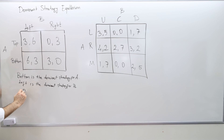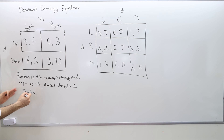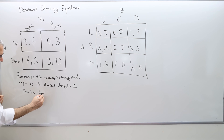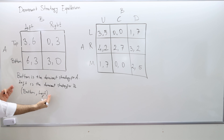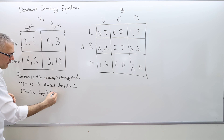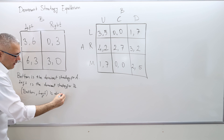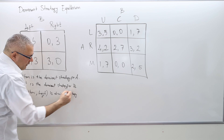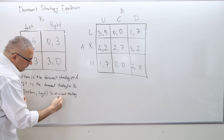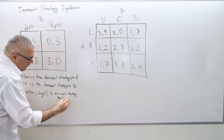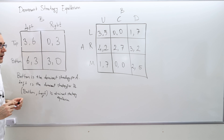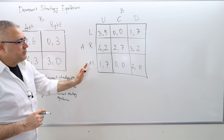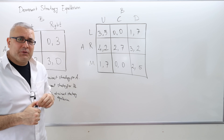The strategy of player A — bottom — and the strategy of player B — left — form the dominant strategy equilibrium. Now let's move to a slightly more complicated game.